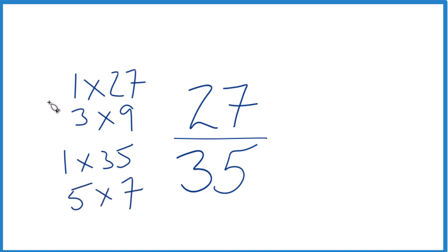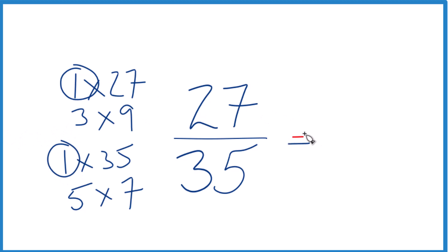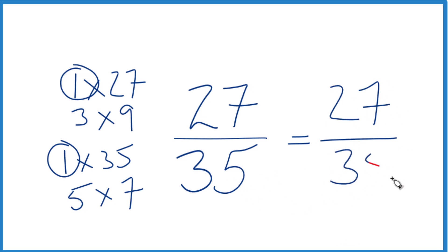When we look at the factors for 27 and 35, the only common factor is 1 — that's the greatest common factor. So if we divide 27 by 1, we get 27. If we divide 35 by 1, we get 35. And that's what we had before. That means the fraction 27 thirty-fifths is already simplified; we can't reduce this any further.